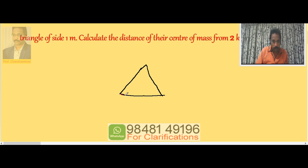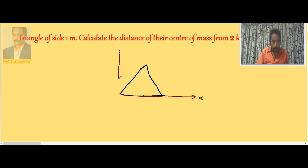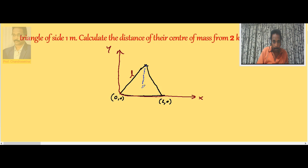Let us imagine an equilateral triangle with one side on the x-axis. If L is the side length, we can take the coordinates of the corners: one vertex becomes (0, 0), the next is (L, 0). Then, dropping a perpendicular from the third vertex, its x-coordinate is L/2.